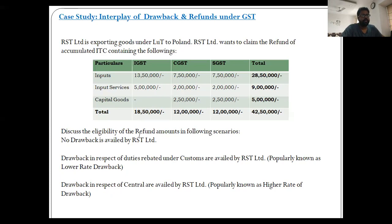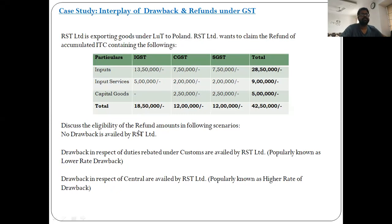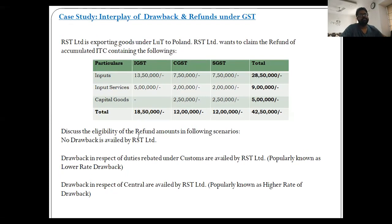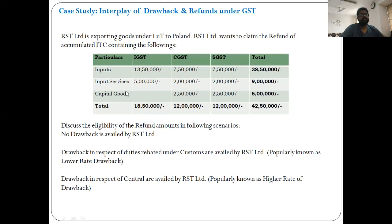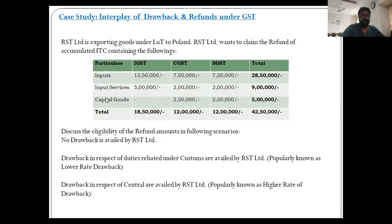Scenario B — drawback in respect of duties rebated under customs is availed by RST Limited, meaning they opt for the lower rate of drawback. In that case, the scenario would remain the same — he will still be eligible to claim the central and state taxes, i.e., the full accumulated ITC in respect of inputs and input services — amounting to Rs. 37,50,000.